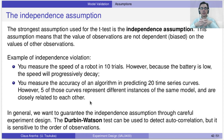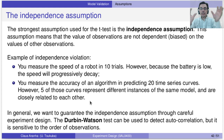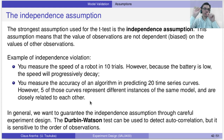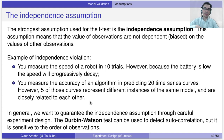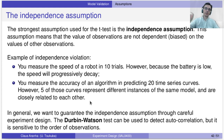The independence assumption is actually more important, and a key problem is that we don't have a reliable test for it — it depends heavily on how you design the experiment. The independence assumption means the values of observations do not depend on each other. For example, if you measure the speed of a robot by running it 10 times in a row, the battery may drain and the robot will slow down — your observations are no longer independent. The fix: recharge the battery before every run.